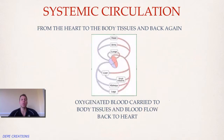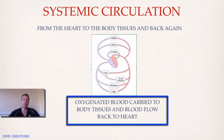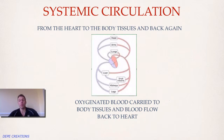The other circulation we're concerned with is the systemic circulation, which carries blood from the heart to the working muscles and then back to the heart. Oxygen is carried to the muscle cells that require it, and carbon dioxide — the by-product of aerobic respiration — is carried back to the heart so the blood can enter the pulmonary circulation to be re-oxygenated.